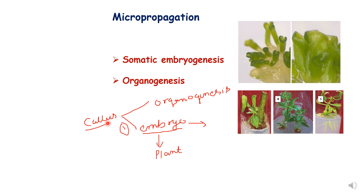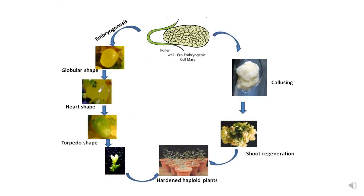Callus is an undifferentiated mass of tissue. Embryos can directly form on the plant part, or the explant can first give rise to callus and then form organs or embryos. These are the two methods for micropropagation.